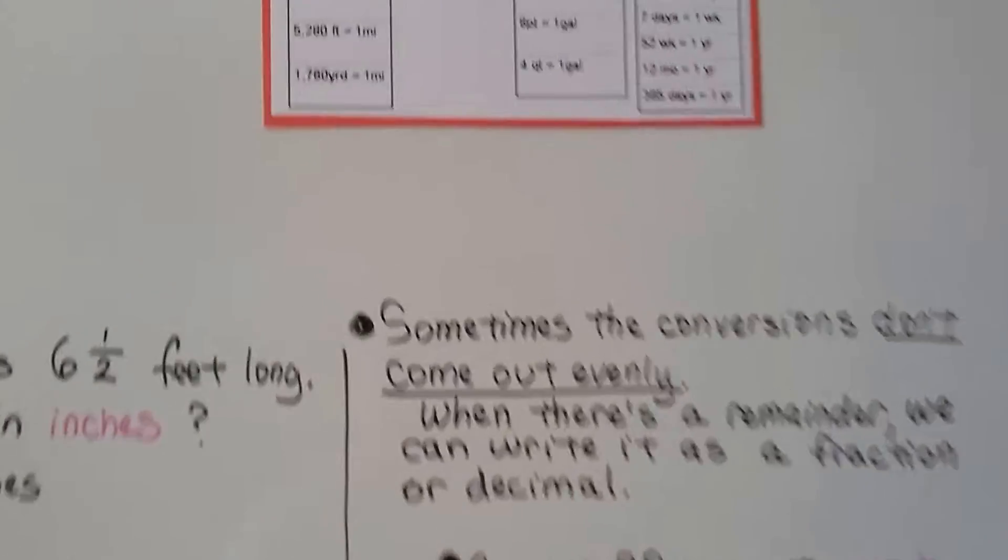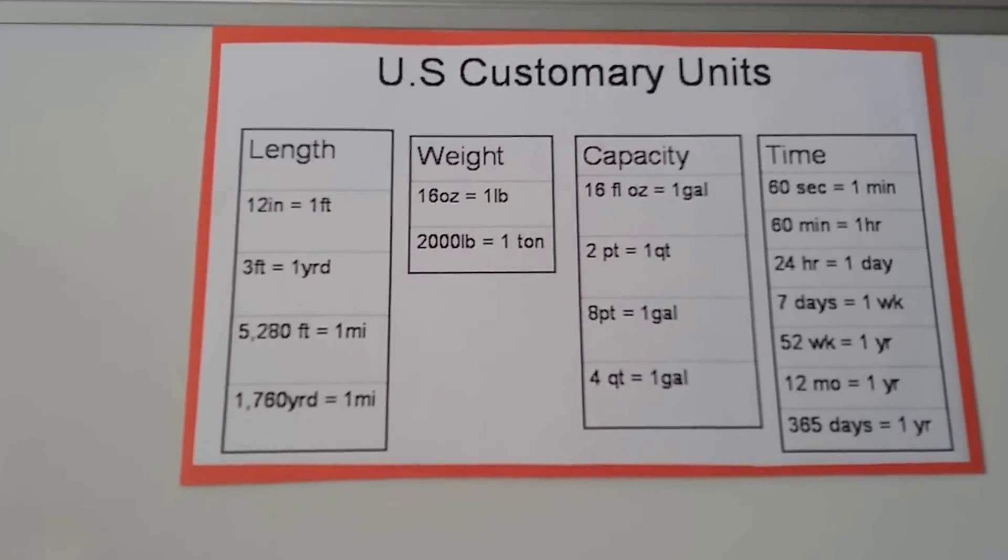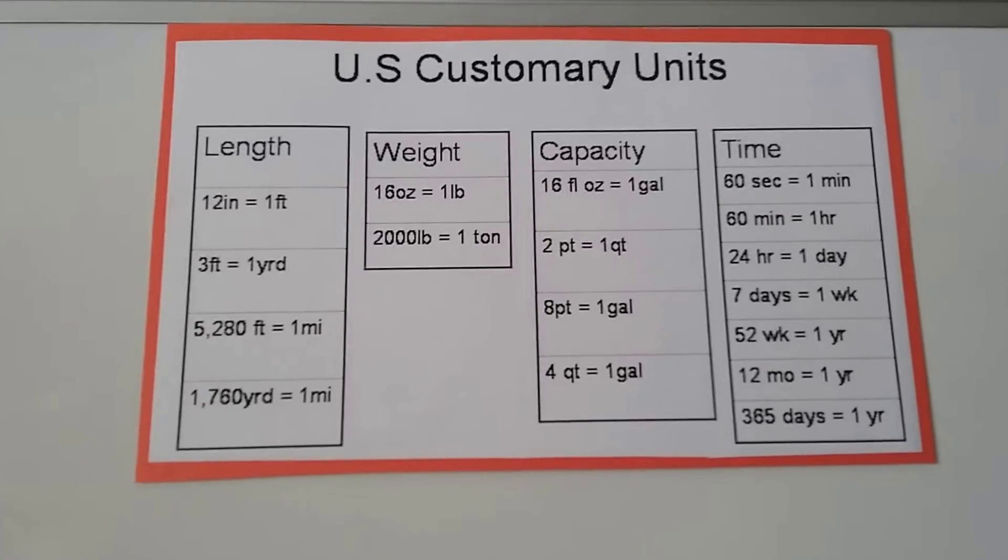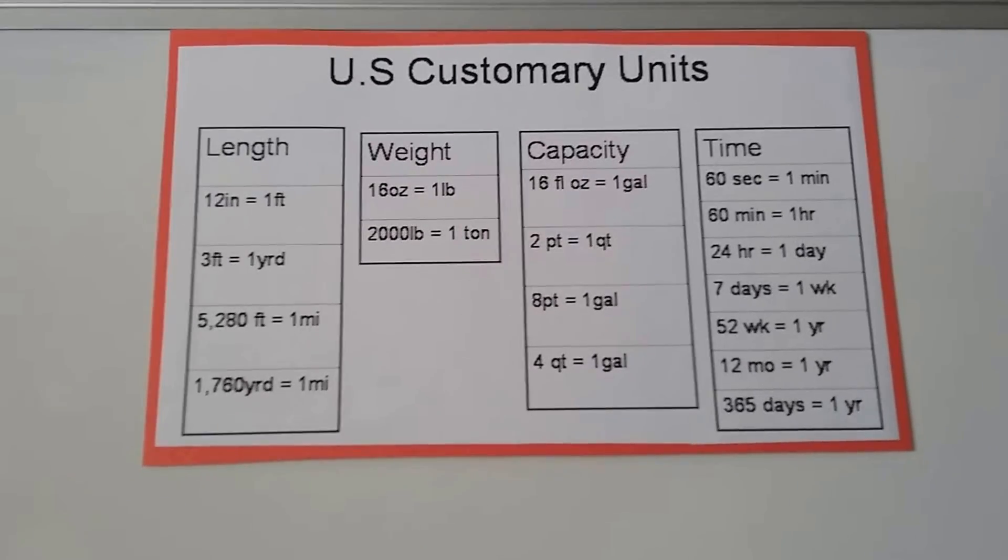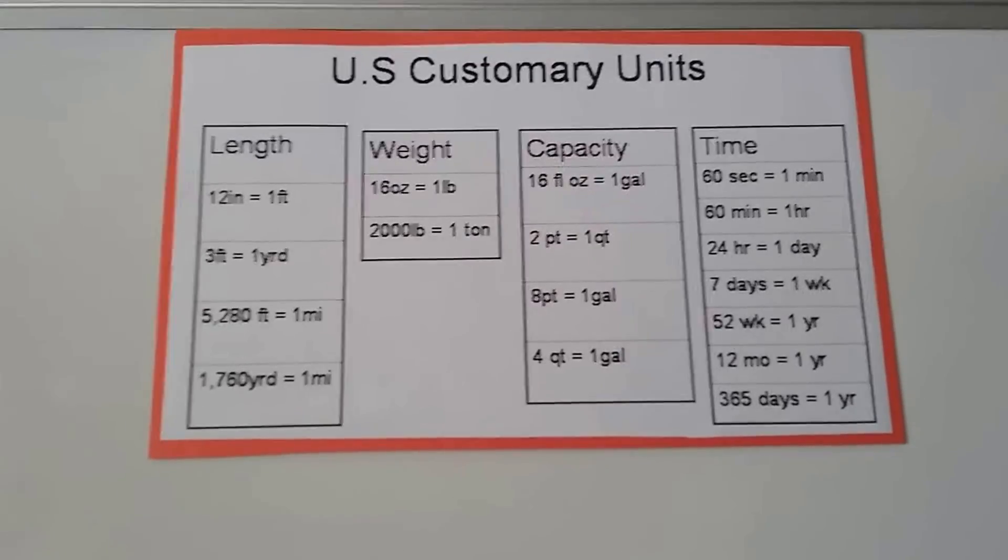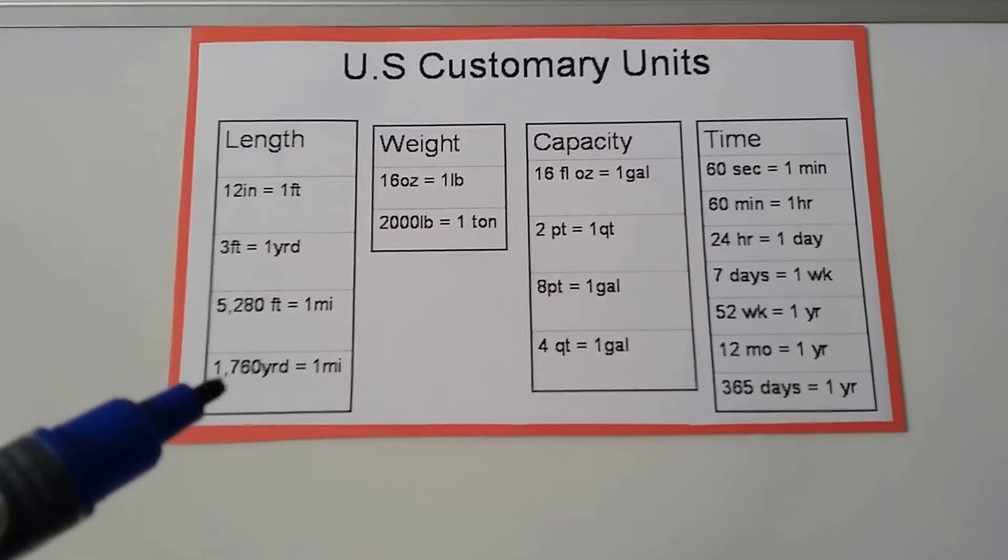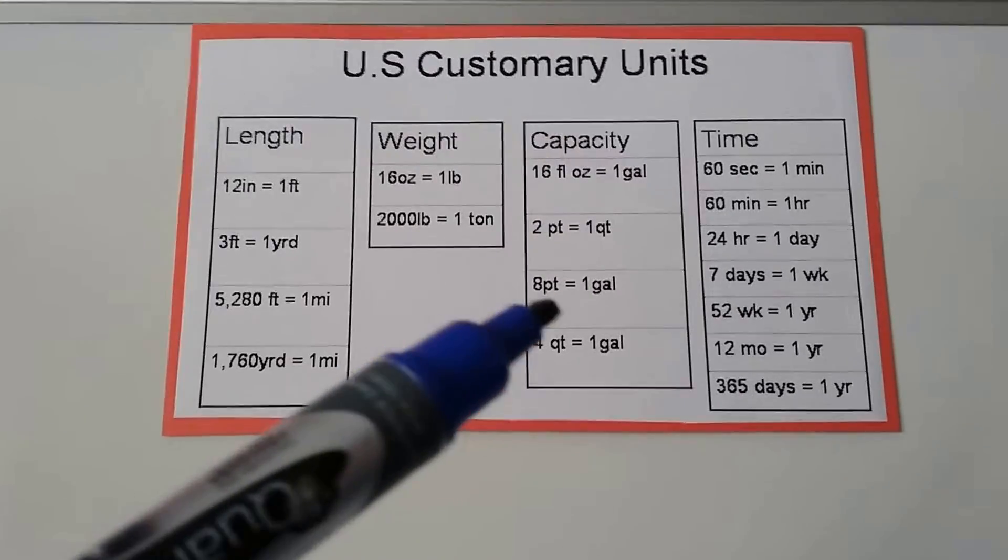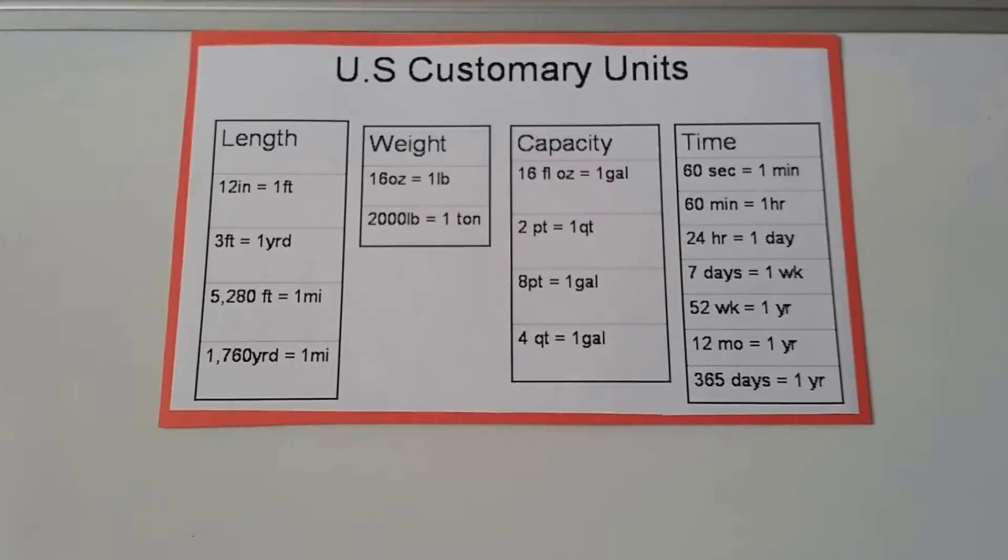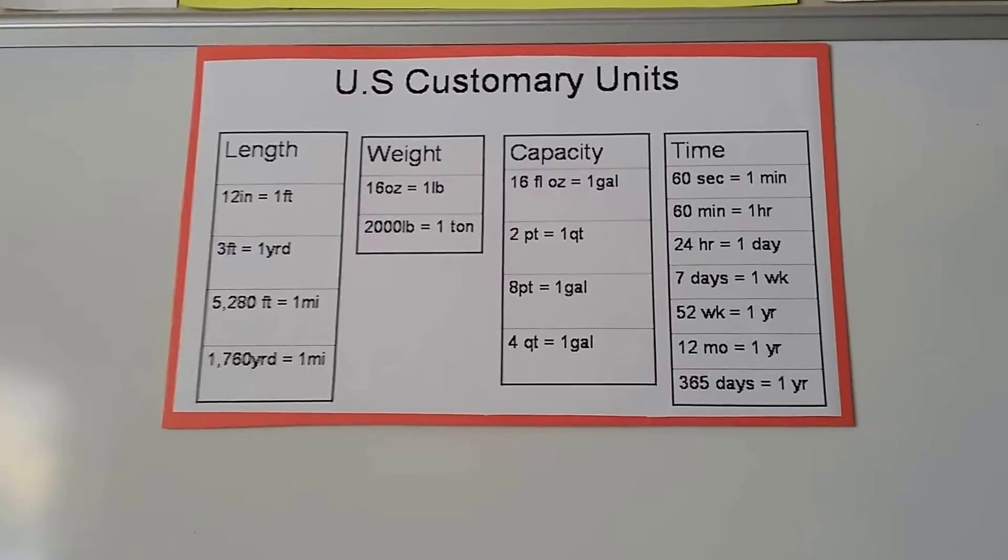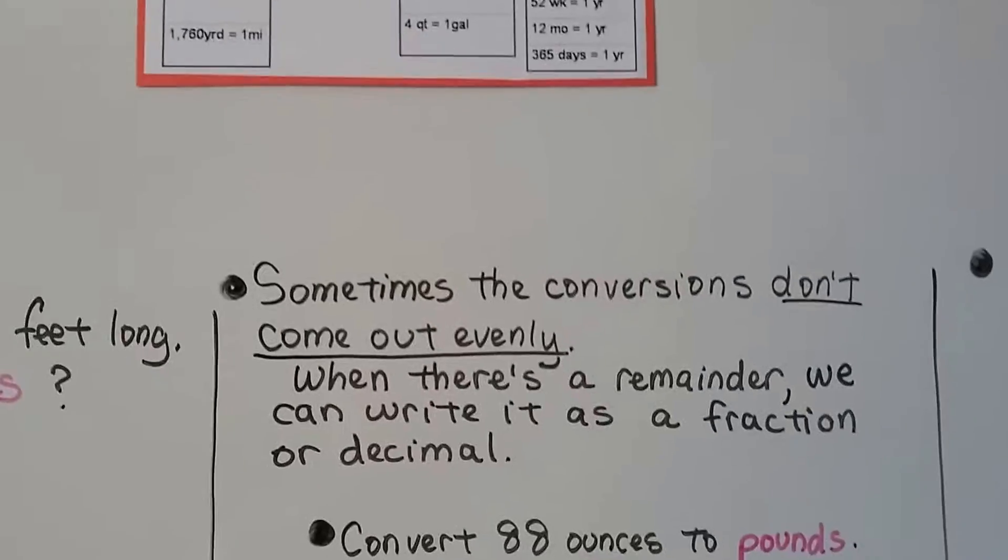So it's very important that you memorize this U.S. customary units chart that was on page 164, and we know most of them already. Most people know there's 12 inches in a foot or there's 60 seconds in a minute. There's just a few that we don't use very often that are going to be like how many feet are in a mile or how many yards are in a mile or how many pints are in a gallon. Those are the ones that are going to be a little tougher to memorize. So just write it in your spiral or have someone quiz you or whatever you need to do.